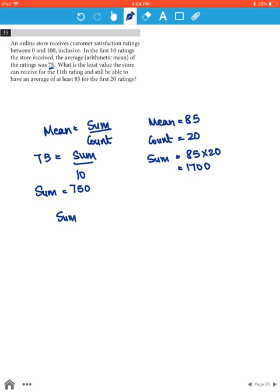Now the maximum sum of the 11th to 20th rating can be 1700 minus 750, which is equal to 950.